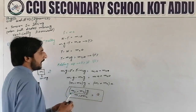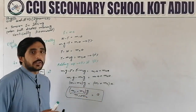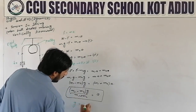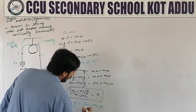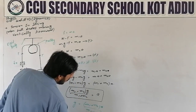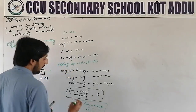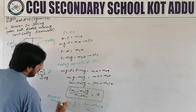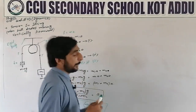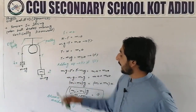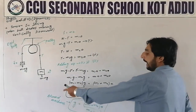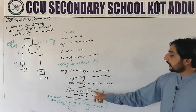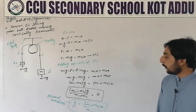When we need to find acceleration, we use the formula: a = (m1 minus m2)g / (m1 plus m2). When we need to find gravitational acceleration, we rearrange: g = (m1 plus m2) times a divided by (m1 minus m2). This setup is called the Atwood machine — used with two unequal masses on a pulley, sometimes to find gravitational acceleration.